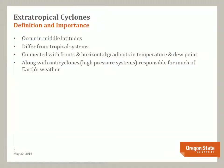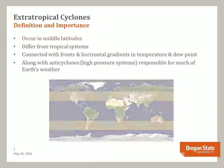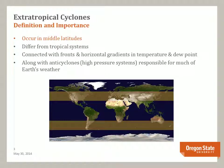Here's a list of the definition and importance of extra-tropical cyclones. Extra-tropical cyclones occur in the middle latitudes, both north and south of the equator. These bands show the location where extra-tropical cyclones form and migrate.